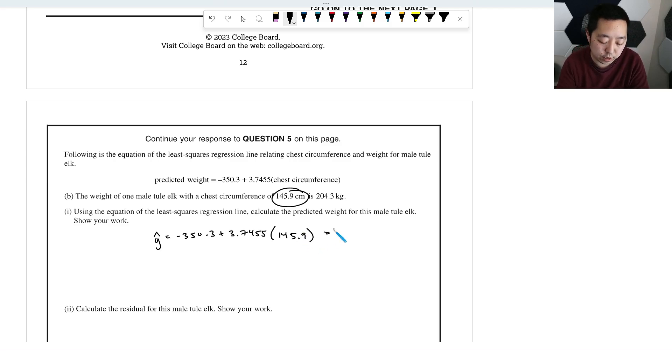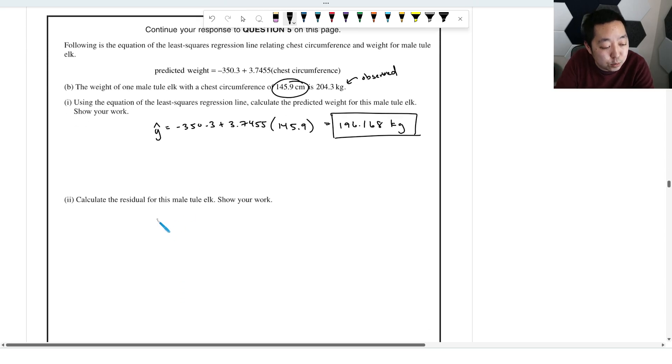So we just put that into our calculator. 3.7455 times 145.9. And I get 196.168 kilograms. And that would be my predicted weight. So this is the actual weight, this is the observed weight, this is the predicted weight.